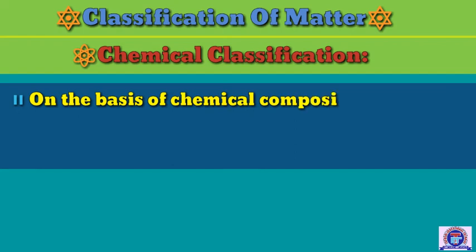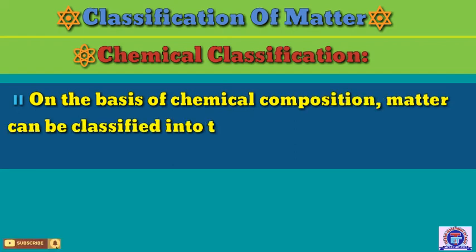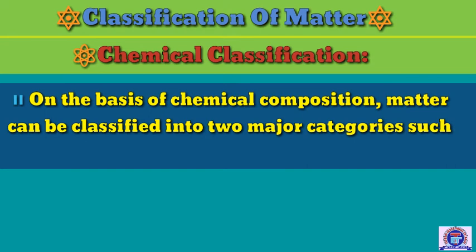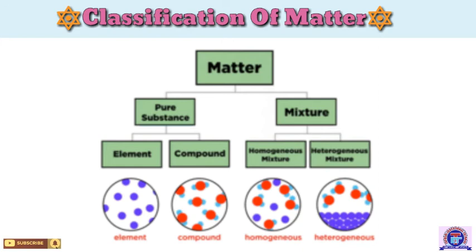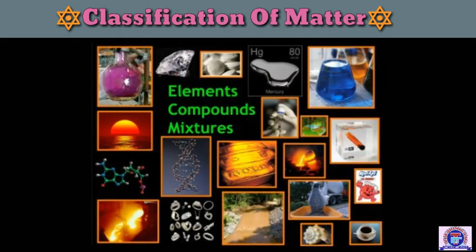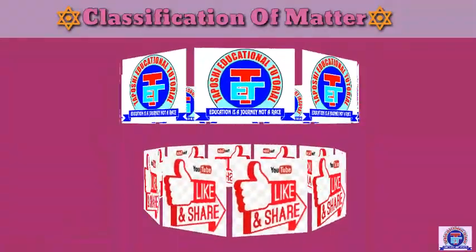Now for chemical classification — on the basis of chemical composition, matter can be classified into major categories such as mixtures and pure substances. This has already been discussed in this channel where you can find information on elements, compounds, and mixtures. Please like, share, and don't forget to click the bell icon. Thank you for watching this matter class.